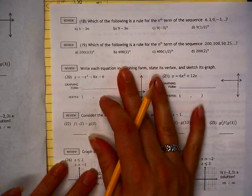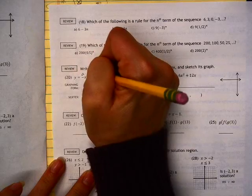All right, we're putting this into a graphing form. This is our A value, our B value, and our C value.